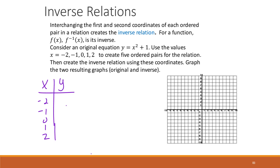So negative 2 squared is 4 plus 1 is 5. Negative 1 squared is 1 plus 1 is 2. Zero squared is 0 plus 1 is 1. And then those values are going to repeat symmetrically.